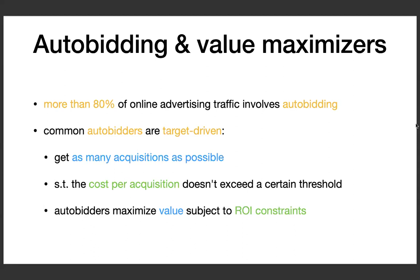First, some basic background about ad bidding and value maximizers. Ad bidding is an auction scheme for advertising online, and in fact it's the dominant scheme which handles over 80% of all online advertising traffic. What's different about ad bidding and ad bidders is that ad bidders are target driven — they're not like classic utility maximizers in microeconomics. For example, ad bidders usually want to get as many acquisitions as possible, subject to the constraint that the cost per acquisition doesn't exceed a certain threshold.